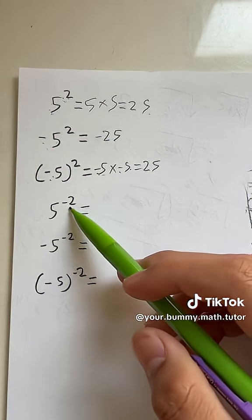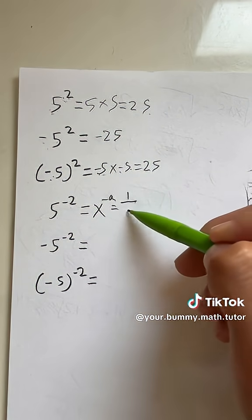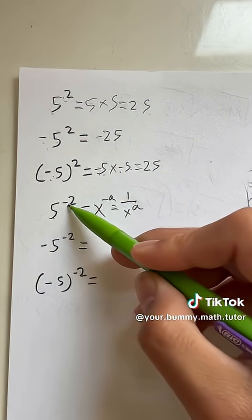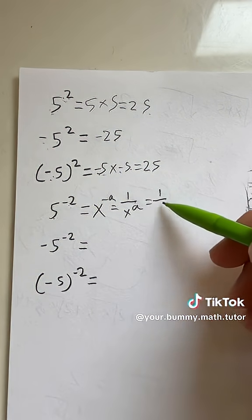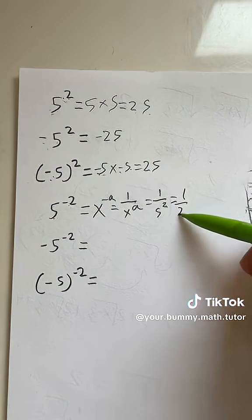Now, what if it's 5 raised to the negative second? We have to remember that when it's x raised to the negative a, this is just equal to 1 over x to the a. So 5 to the negative second is the same as 1 over 5 to the second, which we can rewrite because 5 to the second we know is 25, so it's 1 over 25.